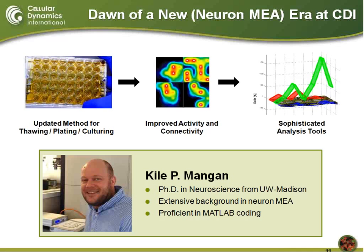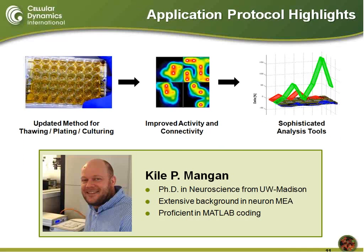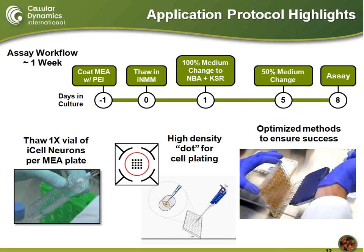To do all of this well, we realized we needed more sophisticated tools for analysis, and so that's why we hired someone like Kyle Mangan out of the neuroscience department from the University of Wisconsin-Madison. He is a PhD scientist with extensive experience — double-digit years — with neuron MEA, and is also quite proficient in MATLAB coding. We've been working together since last fall, along with other members of our applications team, to really refine the neuron MEA assay.